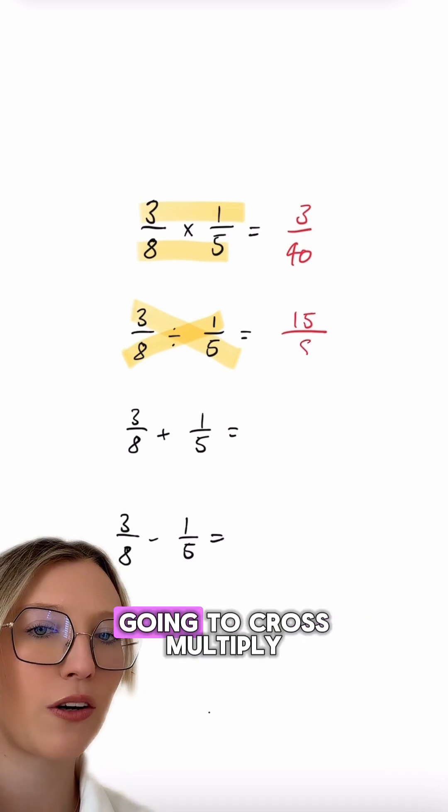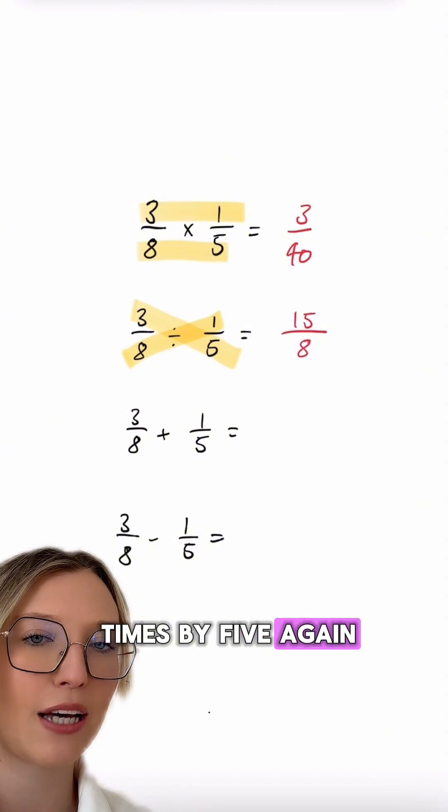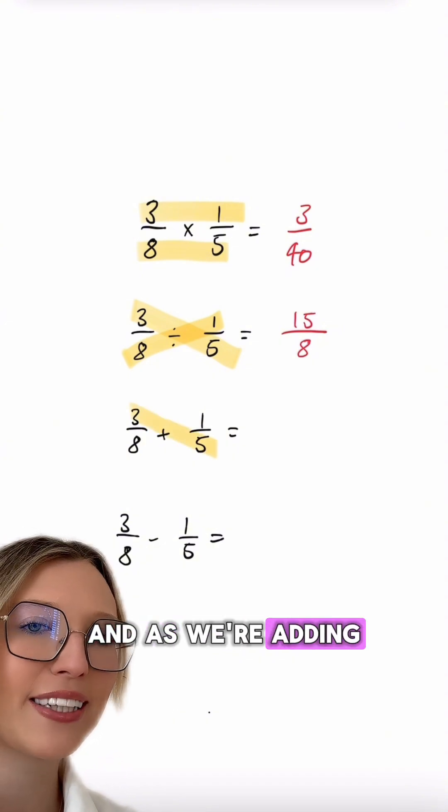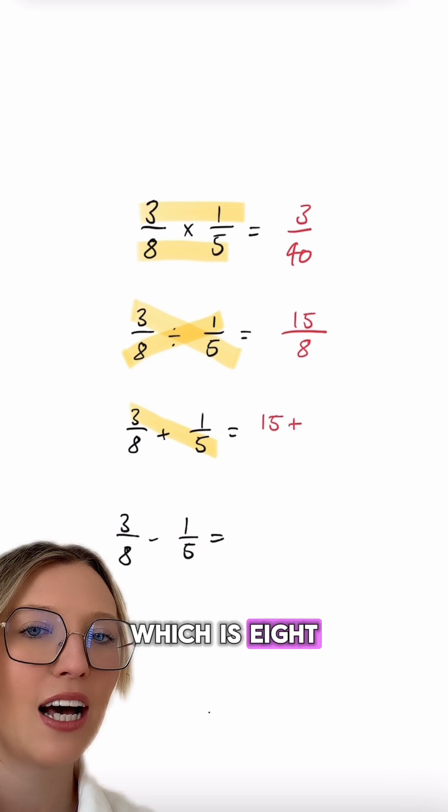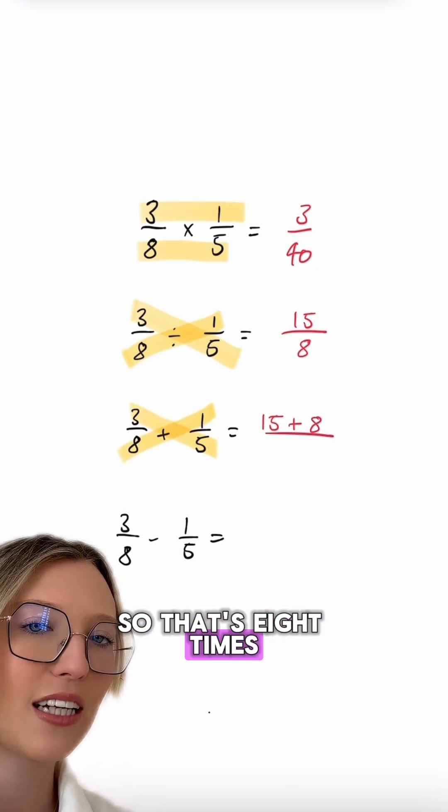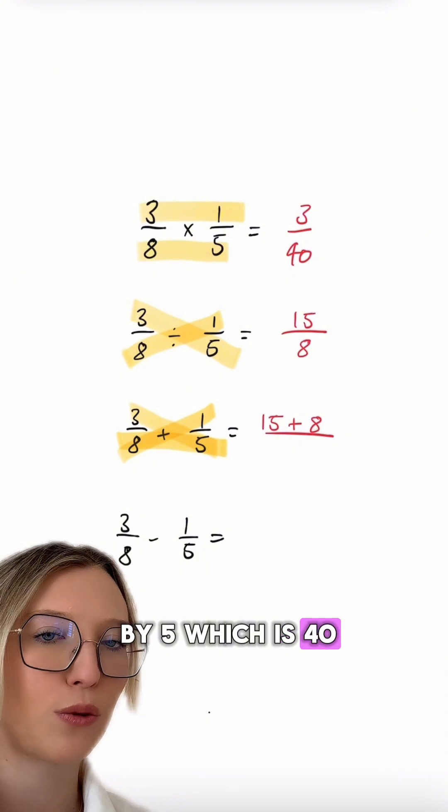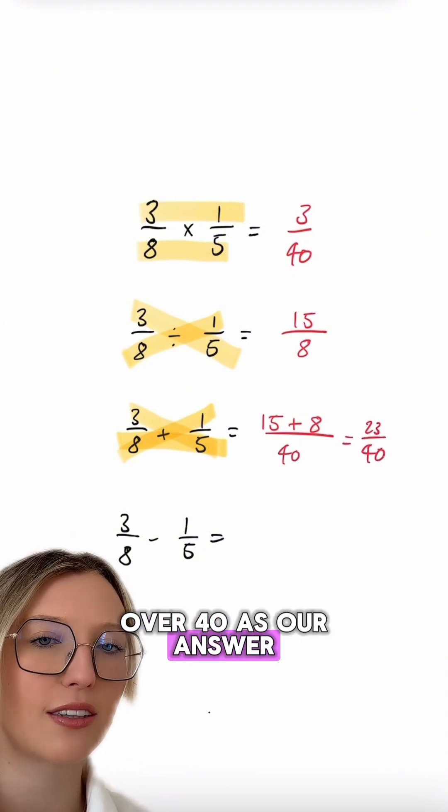To add fractions, we're going to cross multiply and add. So we've got 3 times by 5 again, which is 15. And as we're adding, we're then going to add in our 8 times by 1, which is 8. And we've got that divided by the two denominators multiplied. So that's 8 times by 5, which is 40. 15 plus 8 over 40 is going to leave us with 23 over 40 as our answer.